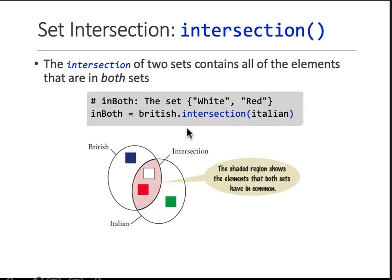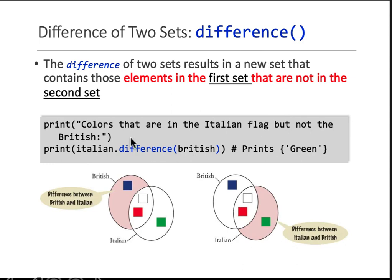Similarly, intersection, you can just say first set dot intersection, the other set. And you will get elements in both. Similarly, or finally, difference. The difference is first set minus the second set. You will get those elements. So, Italian is these three colors minus the colors in the British flag, which were these two. So, difference gives you only green.